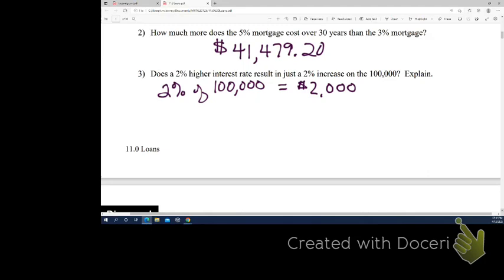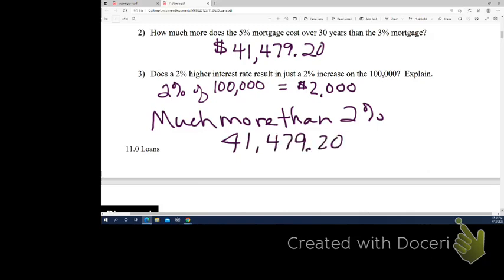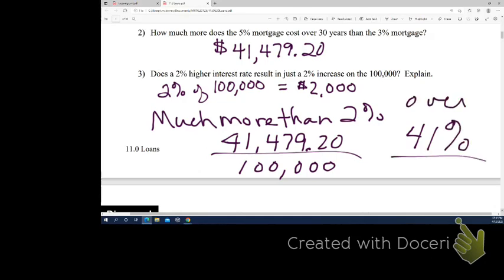So, 2% of 100,000 would only be 2,000. So, it is much more than 2%. What percent, if I did this, of 100,000, so much more than 2%, and if I even figured out, it didn't ask us specifically to figure this out, but if this, out of 100,000, now because of the 100, we could really just move our decimal, right? We could just say this would be like 41, it would be over 41%, right?